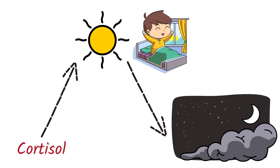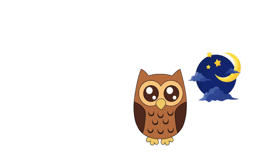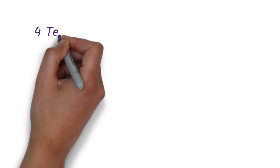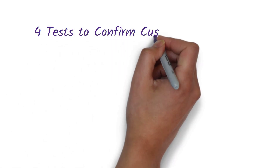This pattern can change if you work a night shift and sleep at different times of the day. Because your body releases cortisol when you experience stress, a night shift worker could have high levels of cortisol at night. There are four tests that can be used to confirm the diagnosis of Cushing's syndrome.